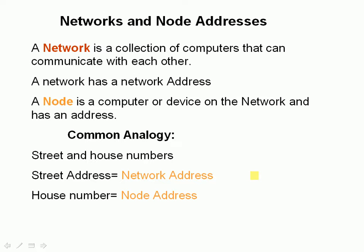Before we look at the addresses, let's look at what a network is. A network is a collection of computers that can communicate with each other, and importantly, a network has a network address. A node is a computer or device on a network and a node has a node address. The common analogy you'll see used is streets and house numbers — you can equate a street address with the network address and the house number with the node address.